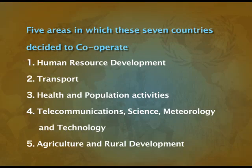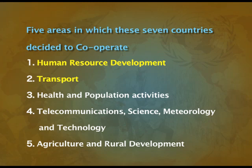There were mainly five areas in which these seven countries decided to cooperate. The first area was human resource development. The second was transport — linking each other with rail and road. The third was health and population activities. The fourth was telecommunications, science, meteorology and technology. The fifth was agriculture and rural development.